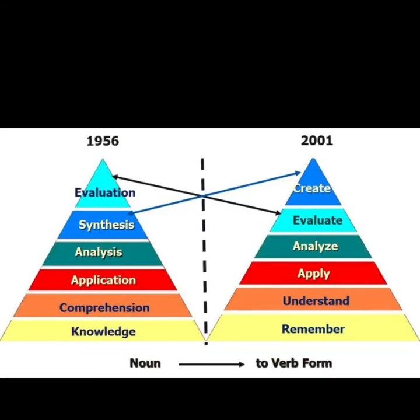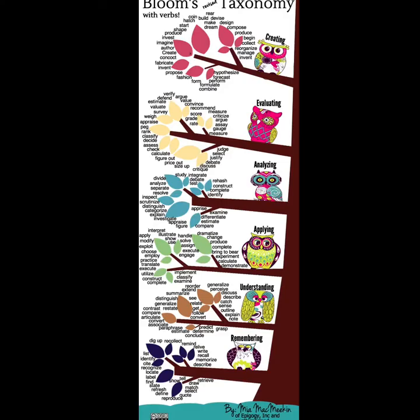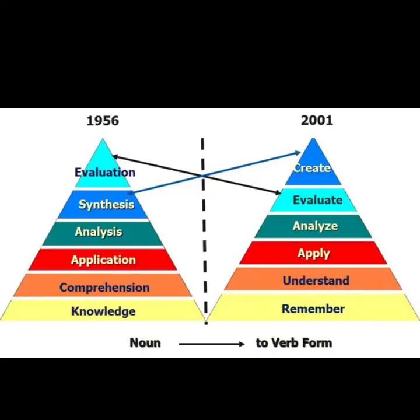Bloom's Taxonomy is quite often represented as a pyramid, but there is no one correct way to depict Bloom's Taxonomy. I like this version because it is friendly and easily understandable. However, this is the most famous way of thinking about Bloom's. You see that it has been revised between 1956 and 2001.